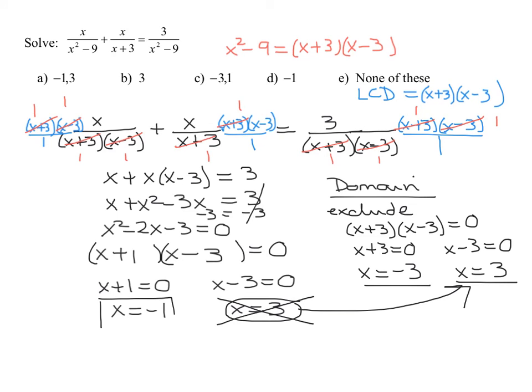Is this one OK? Yes. Negative 1 will not make either of these terms in the denominator equal to 0. But I think you can see if you put 3 in here, you'd get 3 minus 3 is 0. You cannot divide by 0. Therefore, the answer is just x equals negative 1.